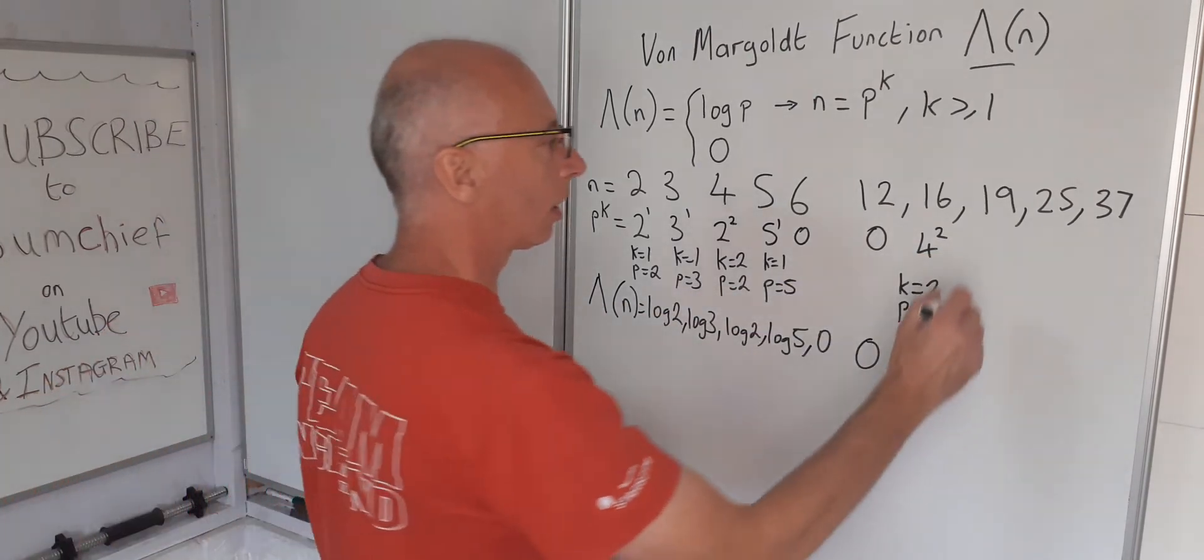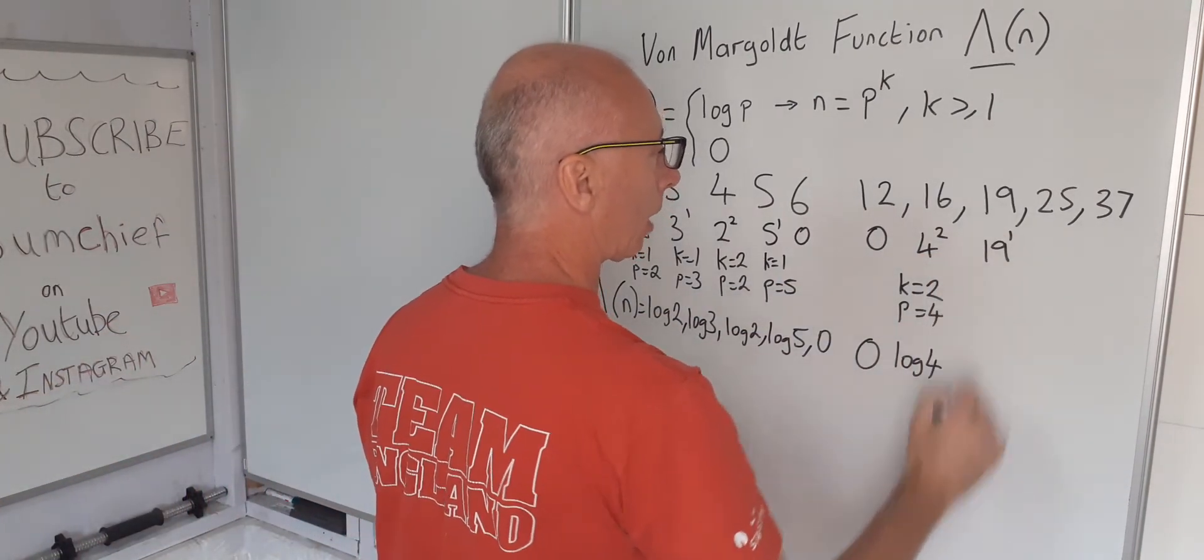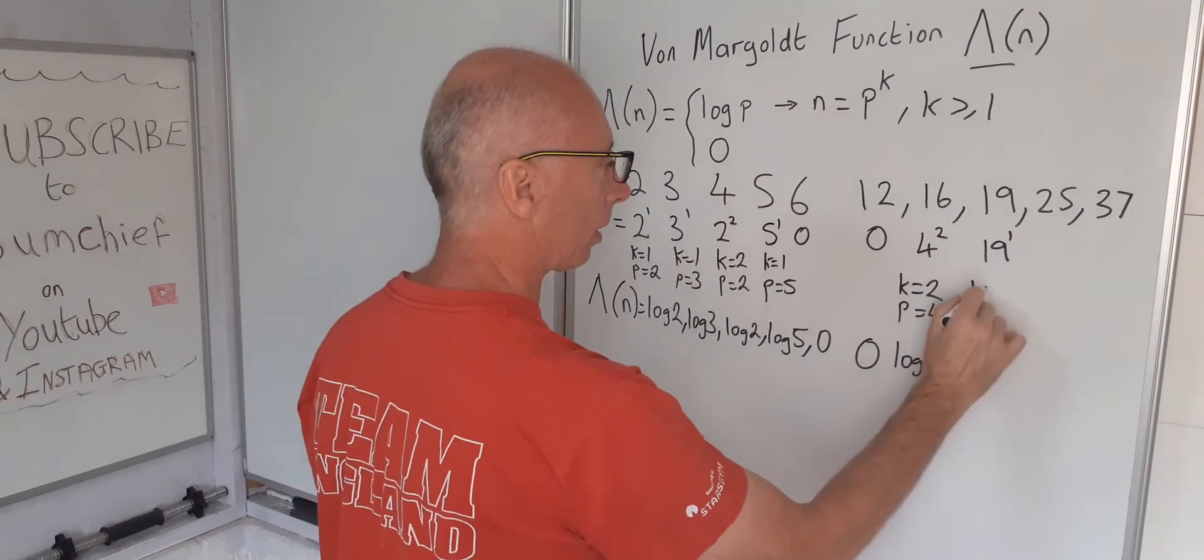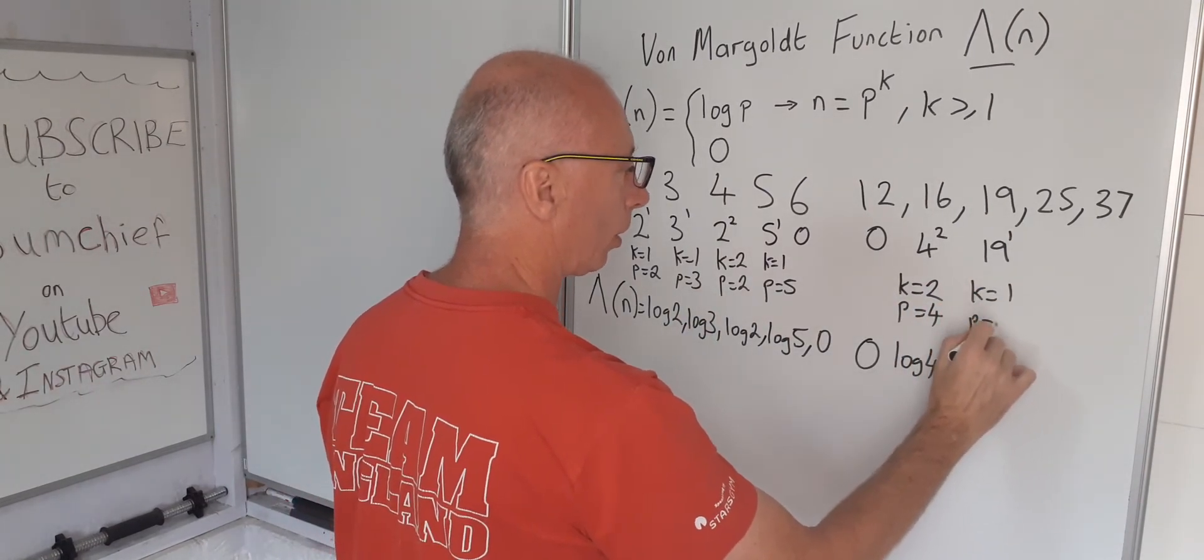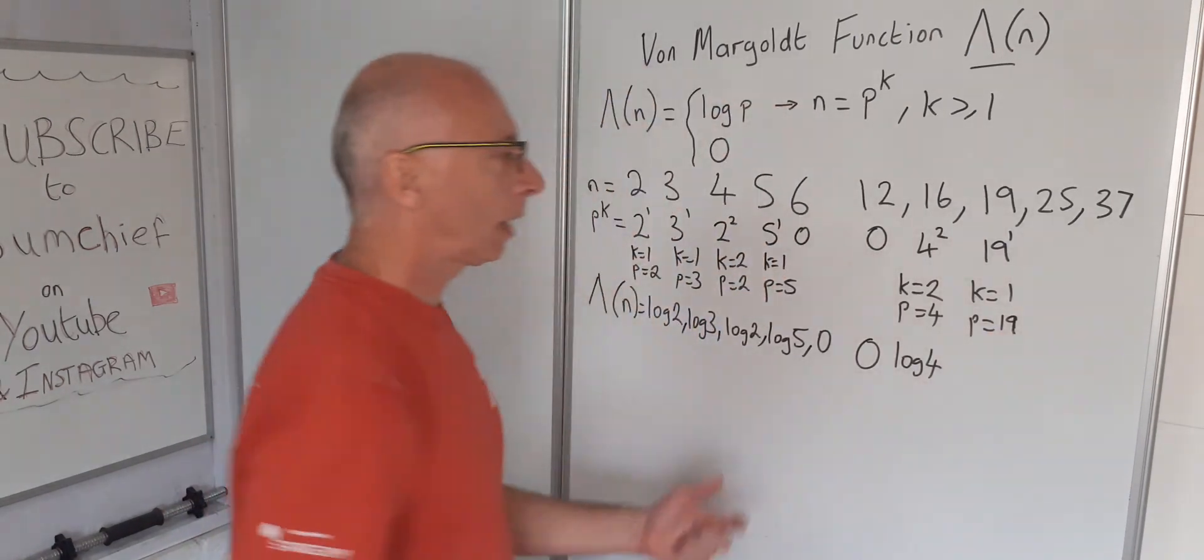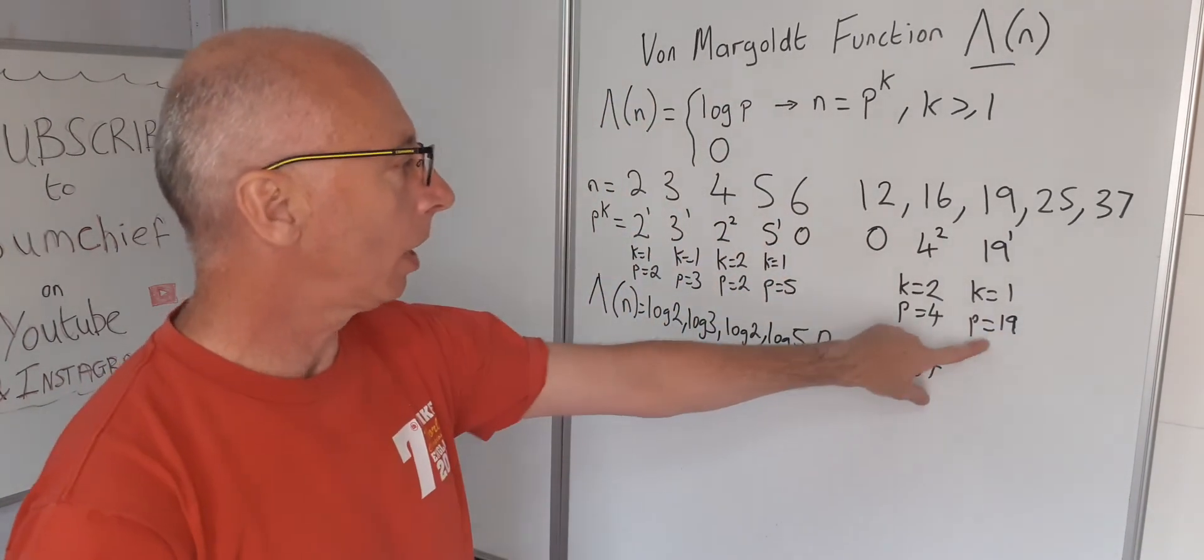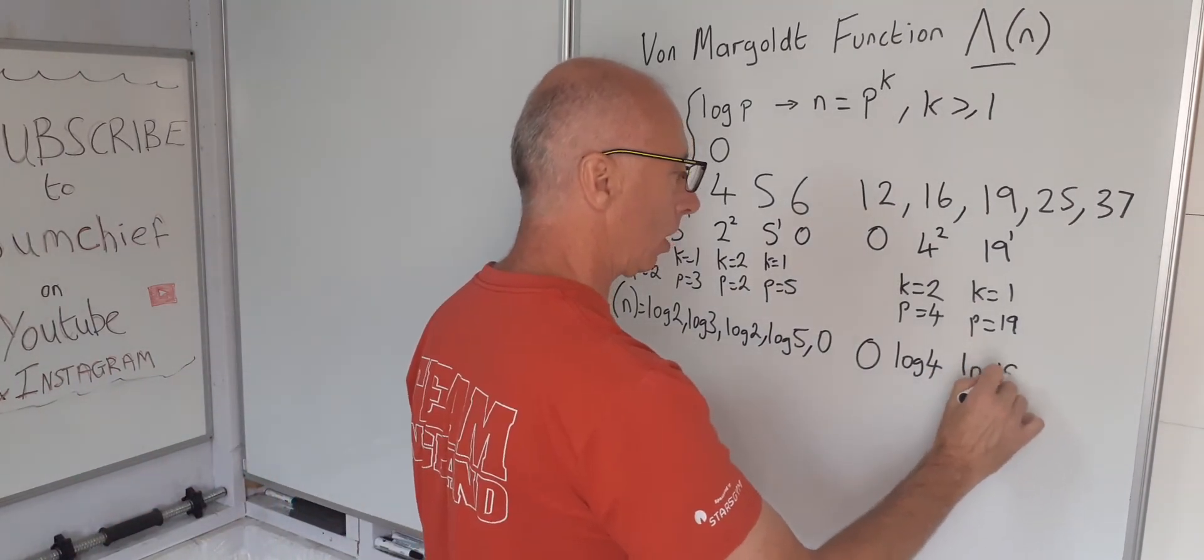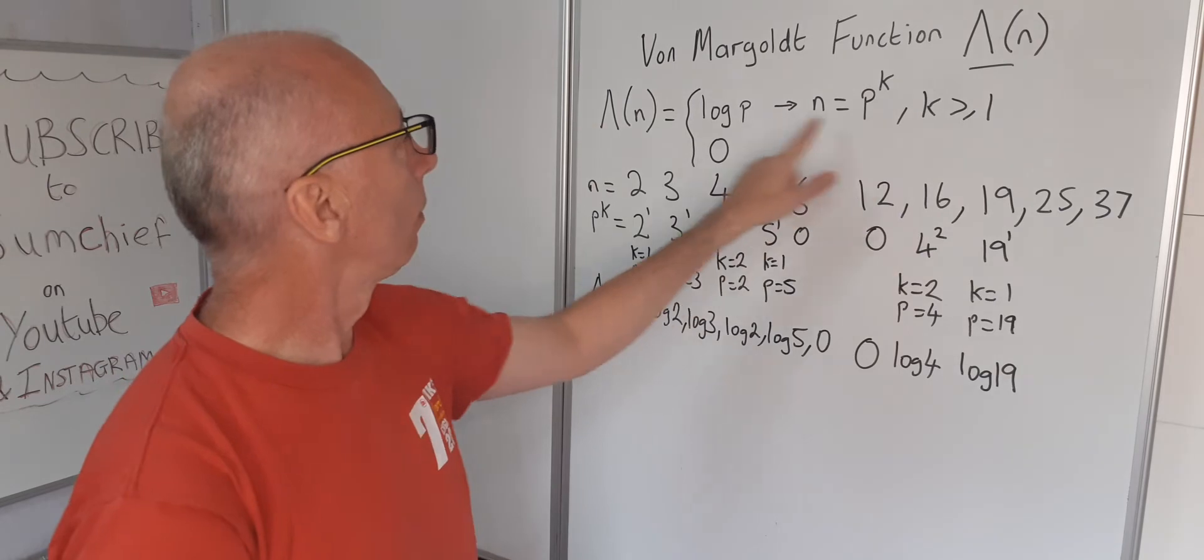Nineteen is a prime number. That's going to be easy to work out. Nineteen to the power of one. So following on from here, K equals one, P equals nineteen. So now you should see a pattern forming. When you've got a prime number it always seems pretty easy to work out. So that will then give us log of nineteen, following this.